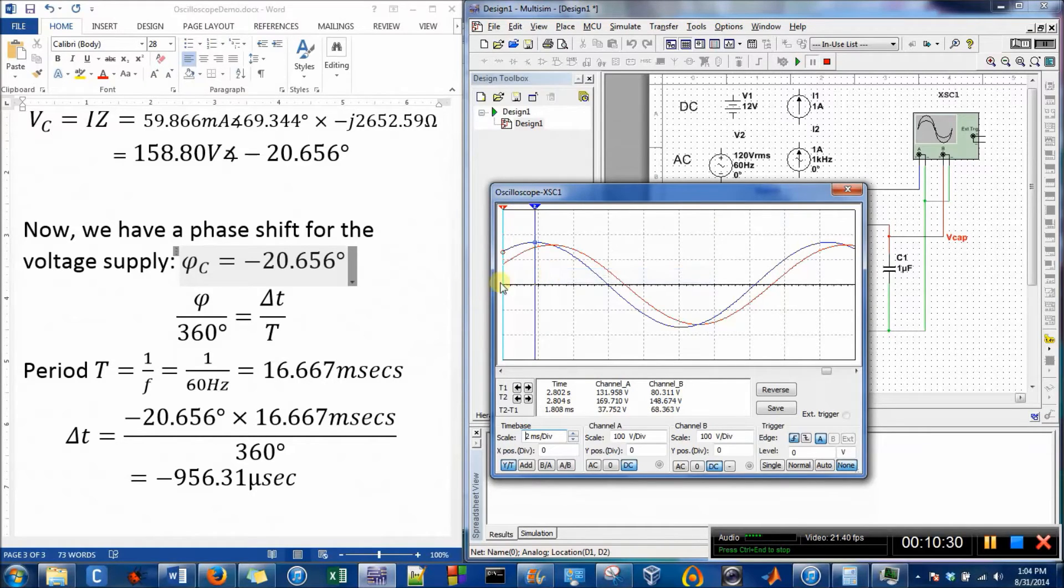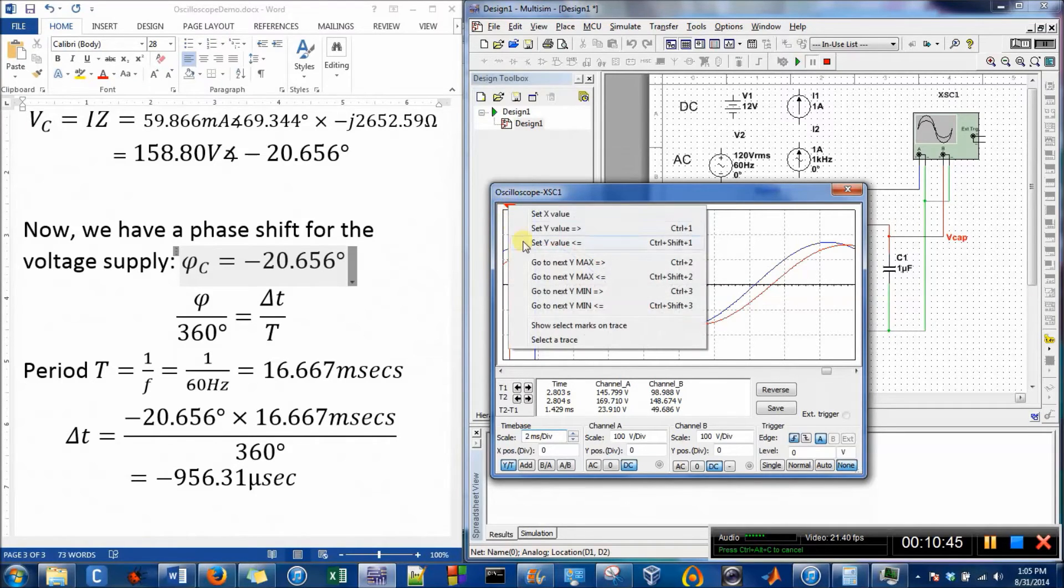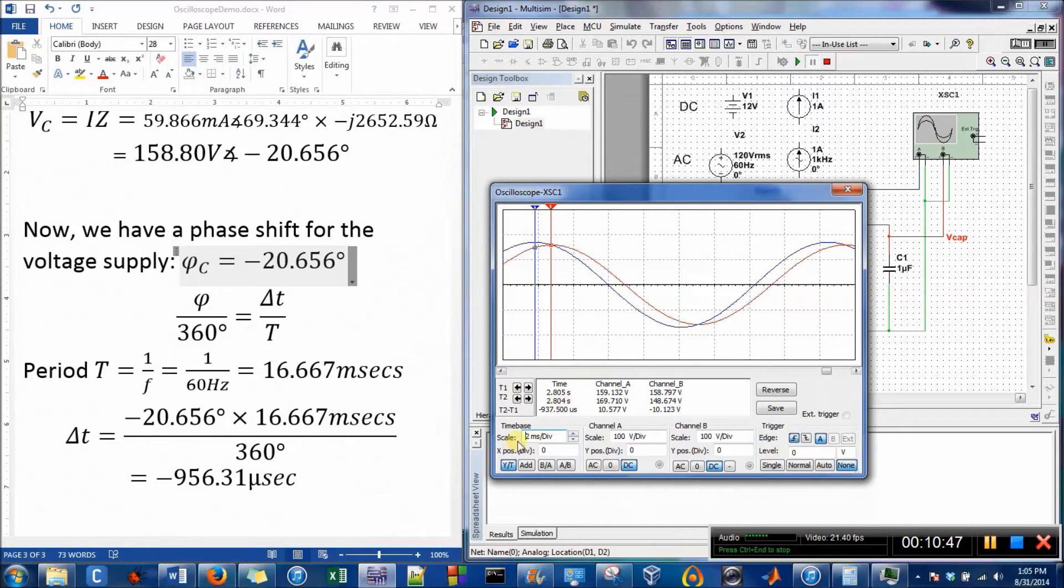Now I want to go to the top of the red curve, so I have to first move it so that these two little dots are on there, then make sure that this is selected, then right-click and go to next Y max.